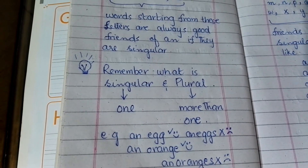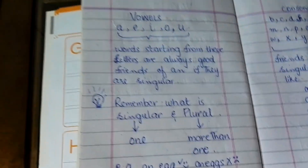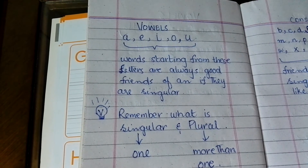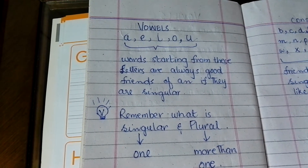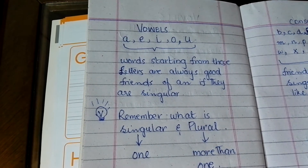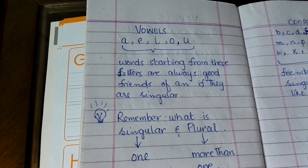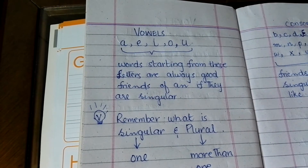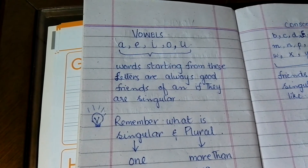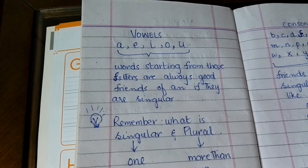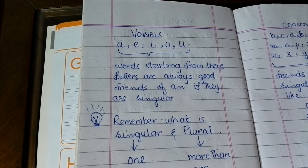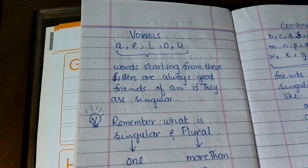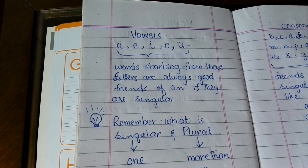Mere baat karne ka maqsad yeh hai ki jaise humne baat ki — agar hum A, E, I, O, U se koi bhi word banaate hai, aur wo singular hota hai, jaise egg hai, to hum usse pehle 'an' lagaayenge — 'an egg' kehenge.